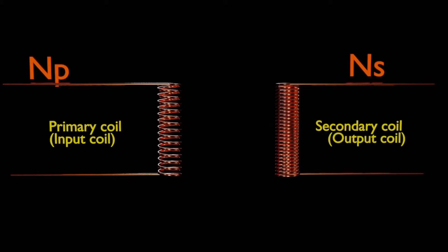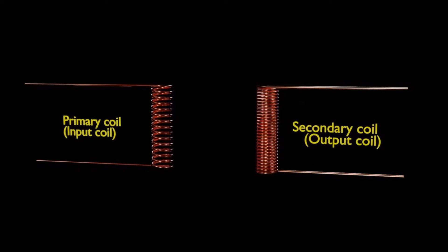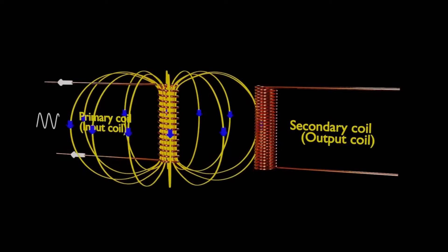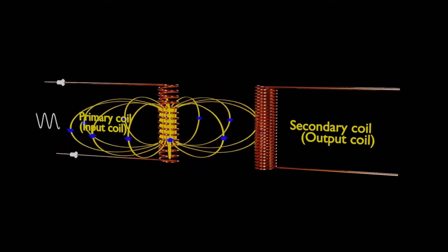Now transformers operate on alternating current or AC supply. When this AC supply is fed into the primary winding, it generates a magnetic field or flux.